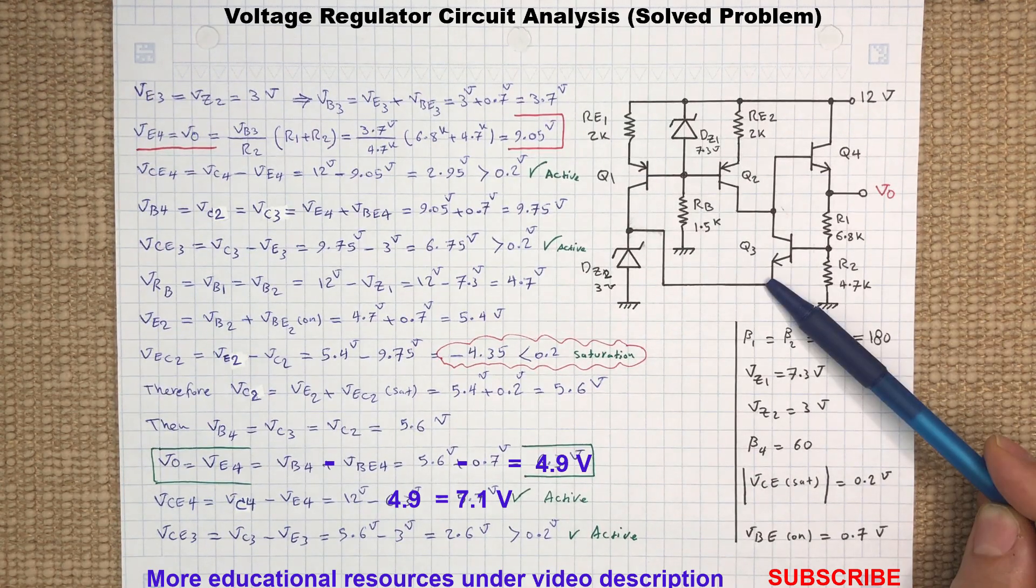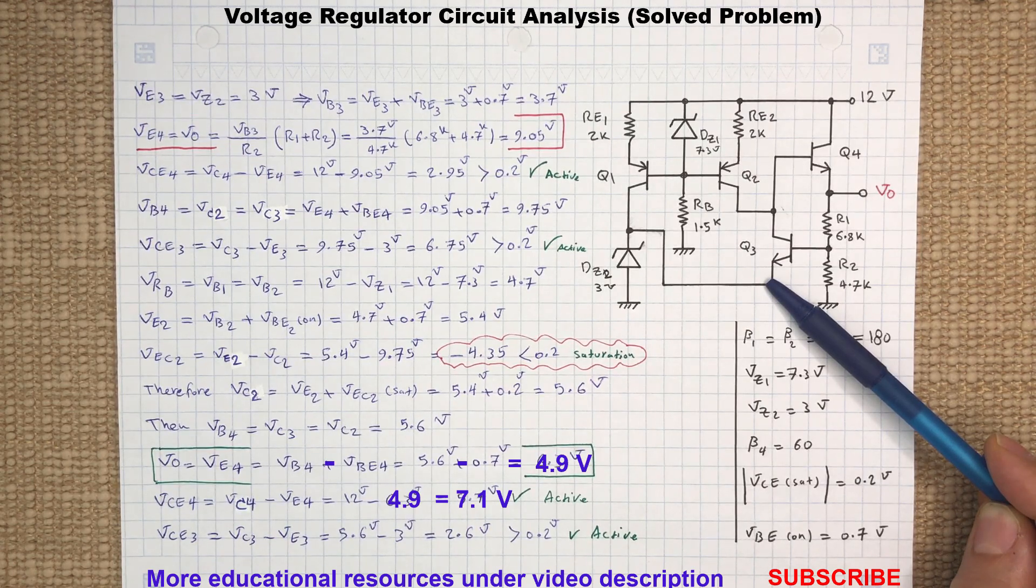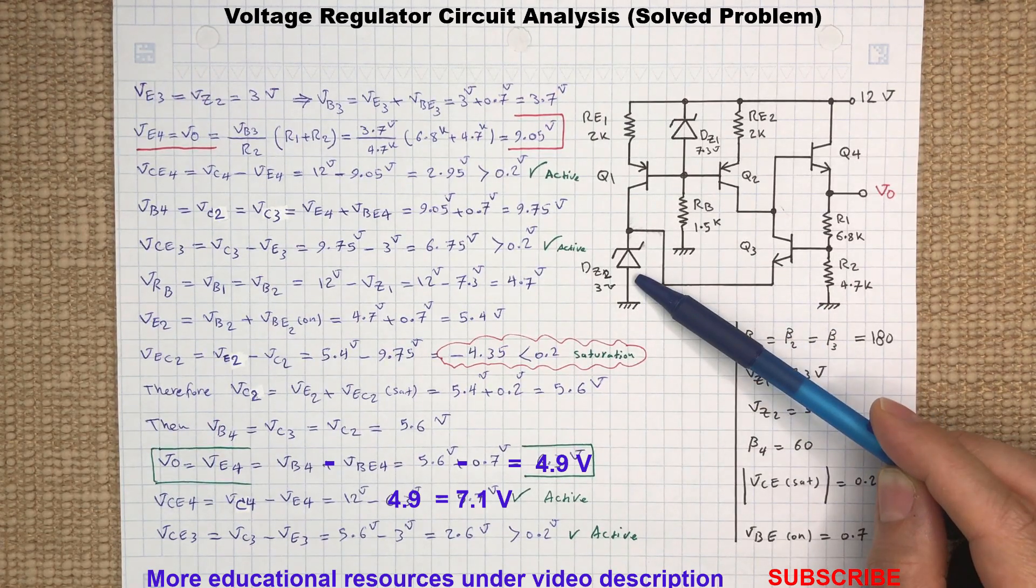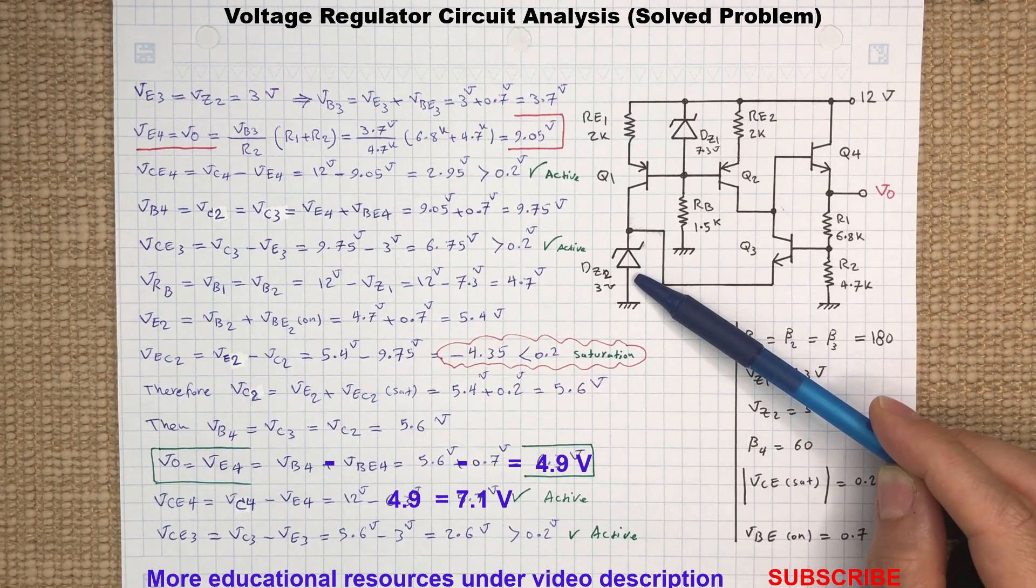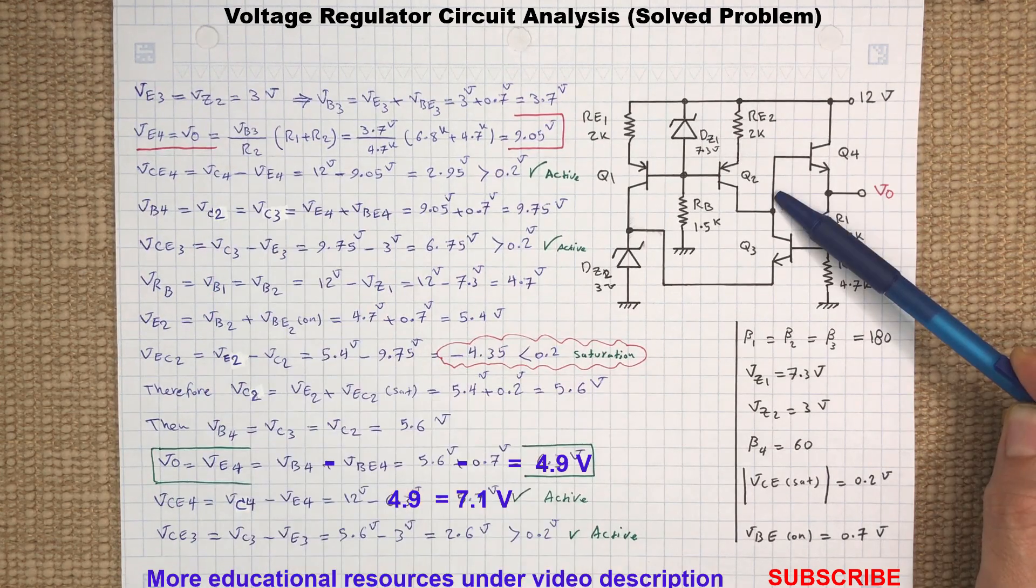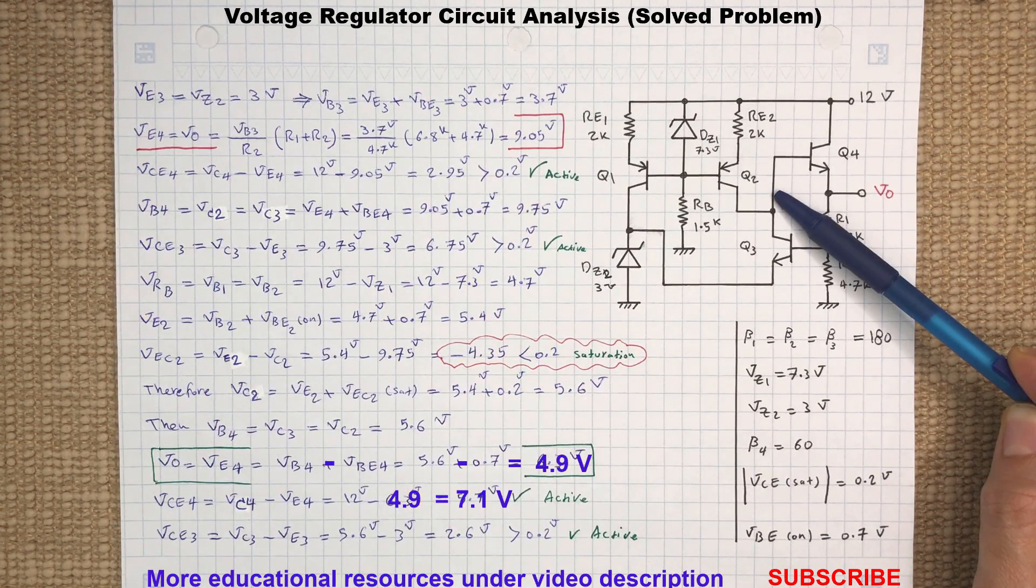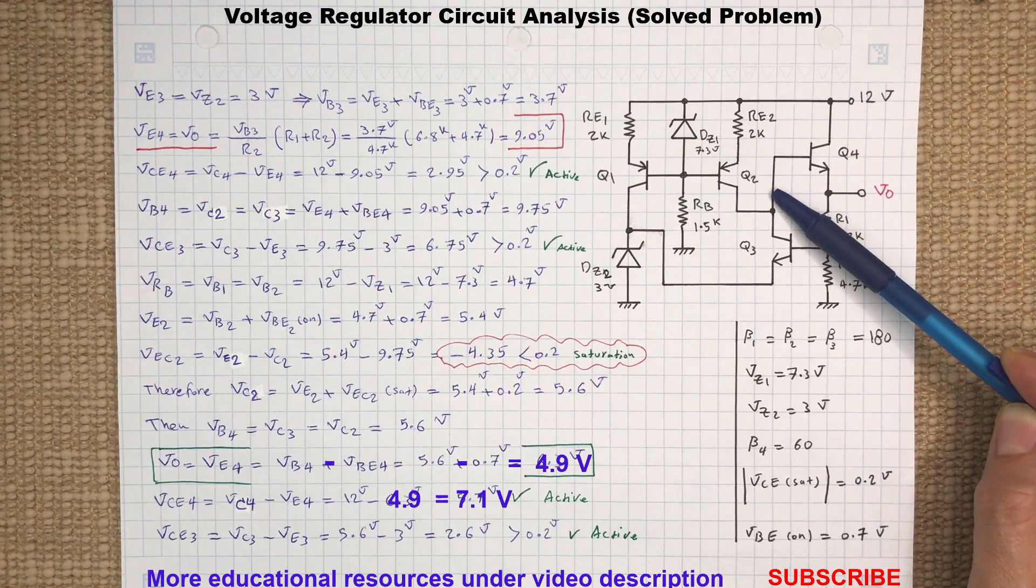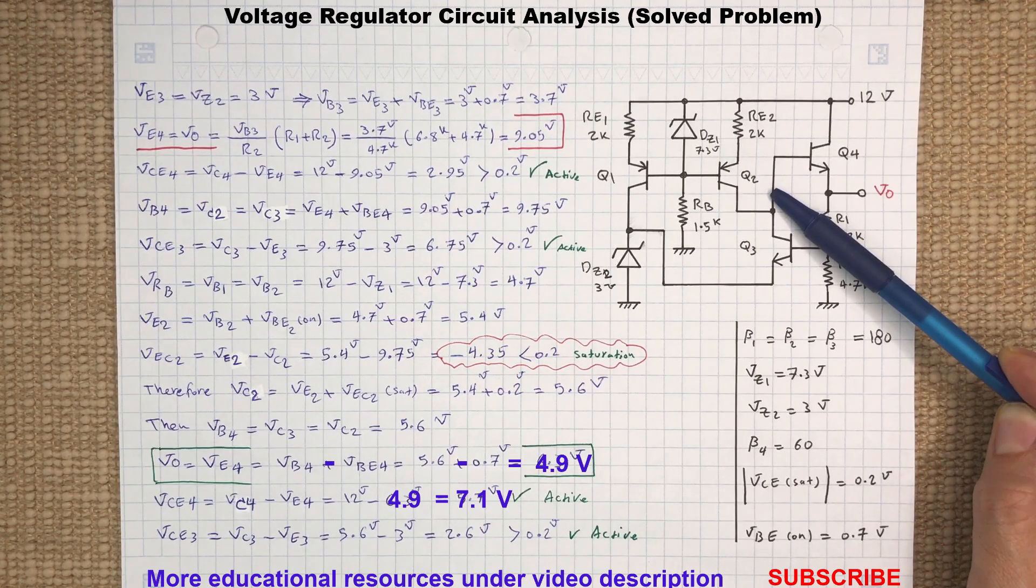In this circuit, to determine VO, we will start looking from the emitter of Q3 because we can easily assume the Zener diode DZ2 is turned on, meaning it is reverse biased so that voltage at the emitter of Q3 is held at 3 volts. As you may notice, we didn't start looking from the base of Q4 because at this moment we don't have any information about the node voltage here.